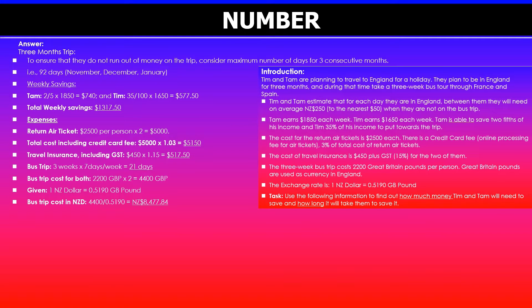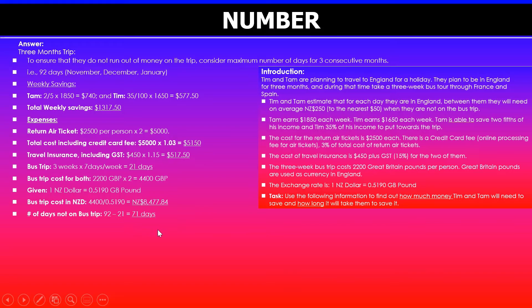We also know they will be on the bus trip for three weeks, which is 21 days. We can use that information to find the number of days they will not be on the bus trip. The total three-month trip was 92 days. Taking away the 21 days on the bus trip leaves 71 days that they will be in England.